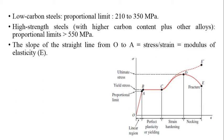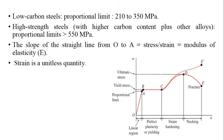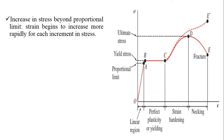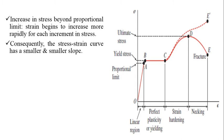The slope of the straight line from O to A — that is, stress divided by strain — is defined as Young's modulus of elasticity E. Since strain is a dimensionless quantity, Young's modulus has the same units as stress. Beyond the proportional limit, the strain begins to increase more rapidly for each increment in stress, and consequently the stress-strain curve has a smaller and smaller slope beyond point A.